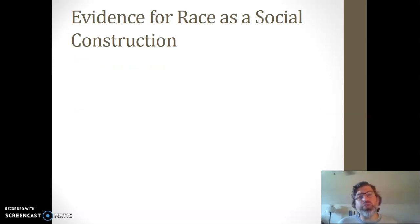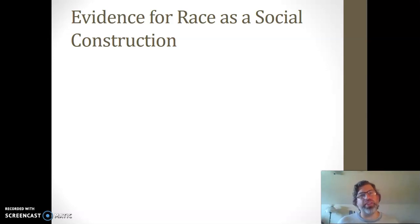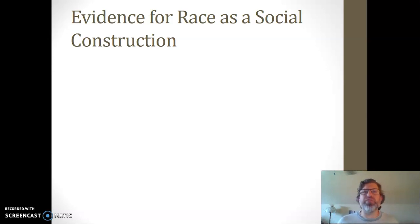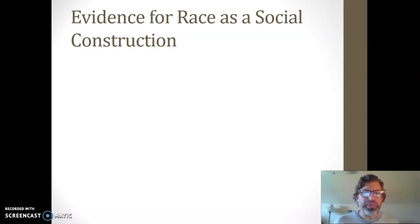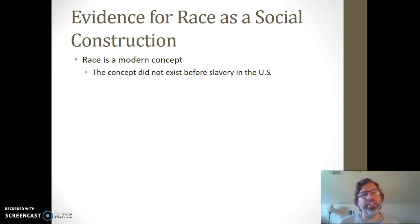I'm going to give you three pieces of evidence for understanding how exactly sociologists see race as socially constructed. We have a hypothesis: race is a social construction. What kind of empirical evidence do we have that could lead us to confirm that hypothesis? I'm going to offer up three pieces of evidence, and then we're going to thread them through an example to see how each of these pieces work.